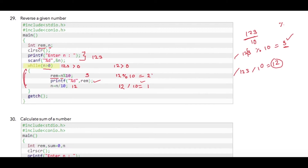We go back again to check the condition: 1 is greater than 0, which is true. In this final iteration, 1 modulus 10 gives 1 because 10 cannot divide 1. We print this value, and then 1 divided by 10 also gives 0 because 10 cannot divide 1, so n is updated to 0.